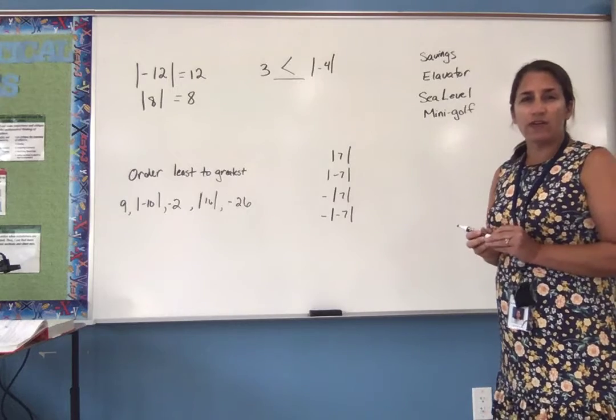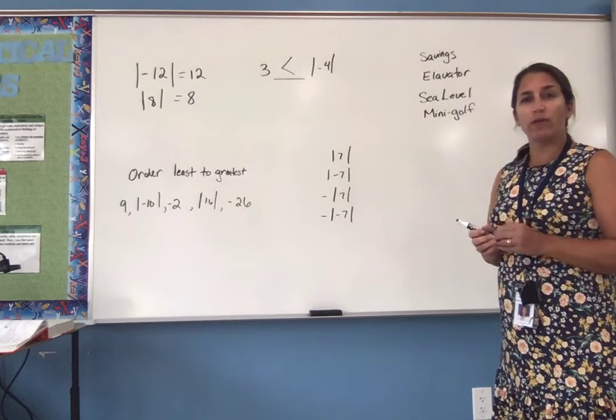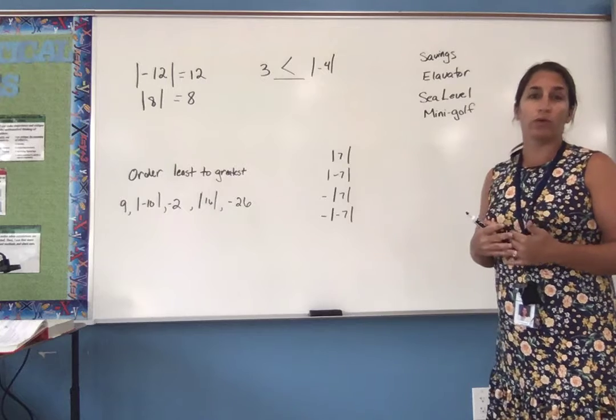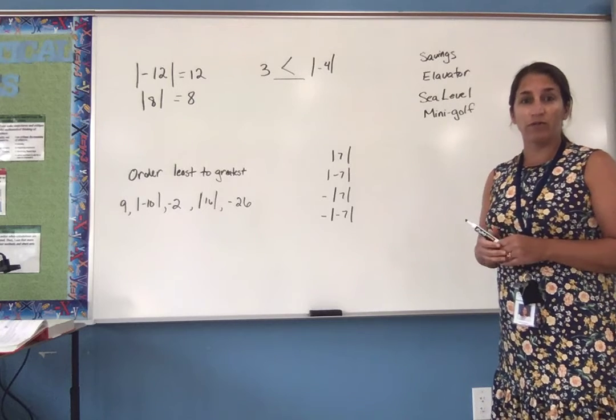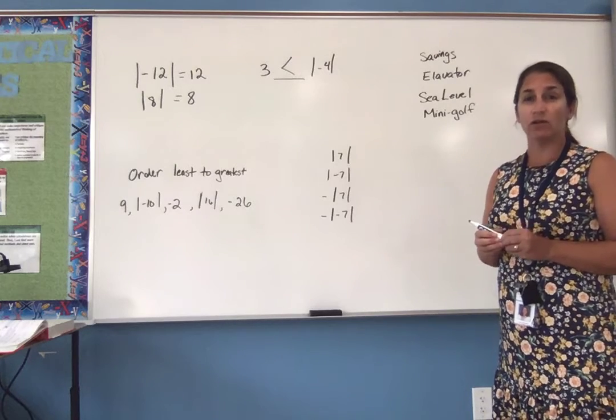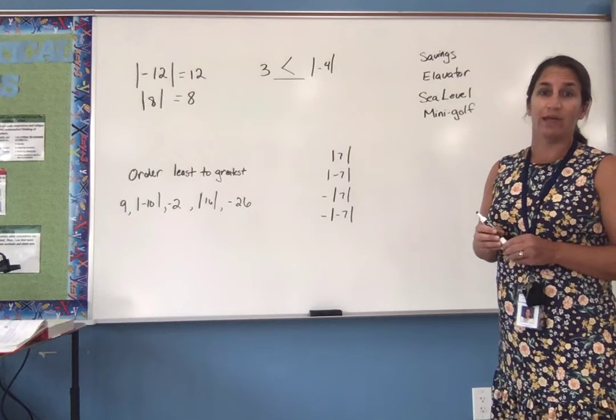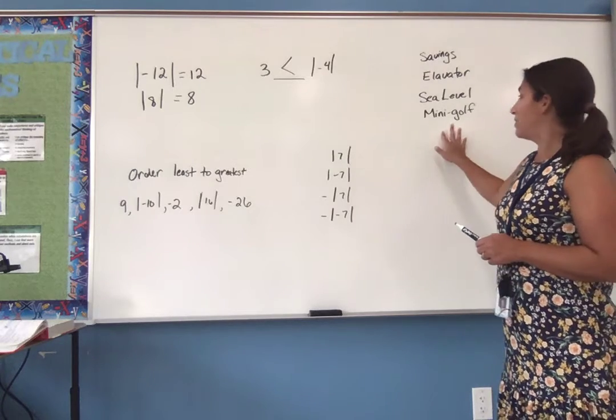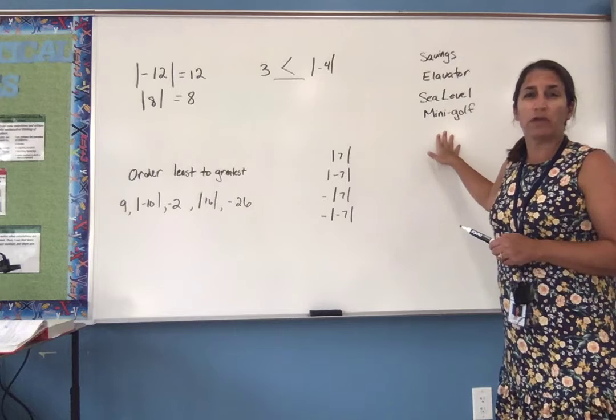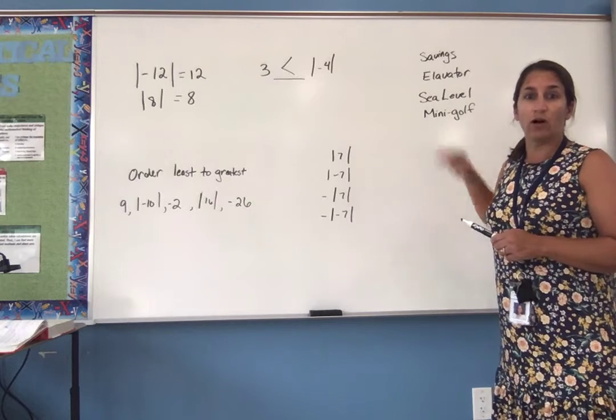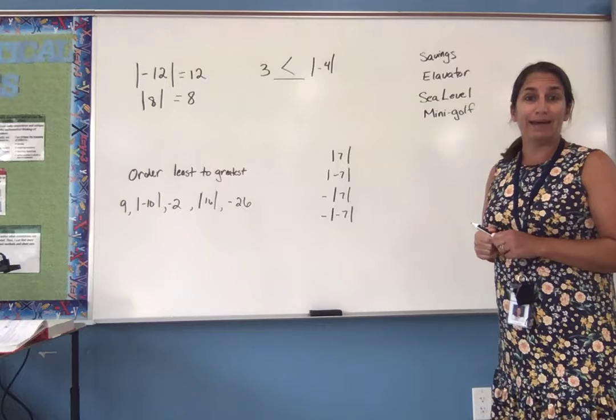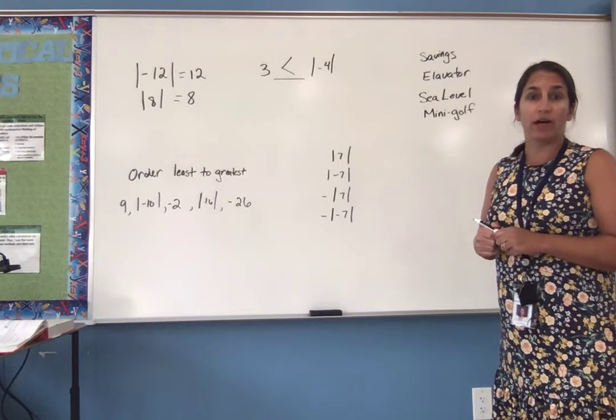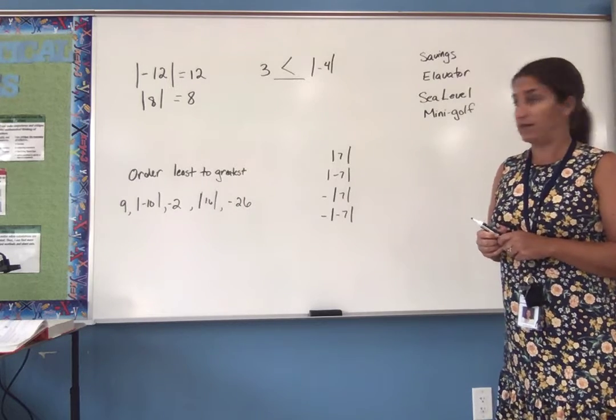And there was a mini-golf example too, where you're talking about whether you are above par or below par. So above par would be a positive integer. Below par would be a negative integer. The tricky thing with that is that the lower the number, the better. We want a low score in golf. So a negative integer would actually be better than getting a positive integer.